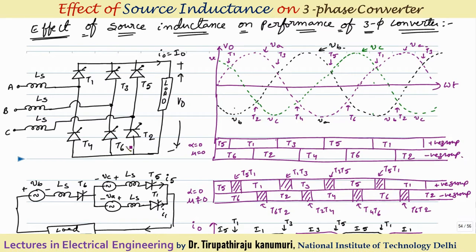In the negative group, whichever thyristor's cathode is more negative will be forward biased and conduct. At alpha equal to 0, T6 connected to Vb conducts initially. Then when Vc dominates Vb, T2 connected to Vc starts conducting. After 120 degrees T4 conducts, followed by T6, then T2 again in sequence.